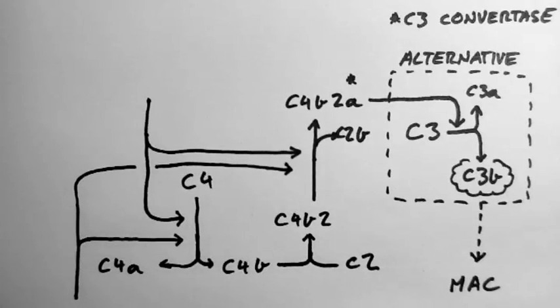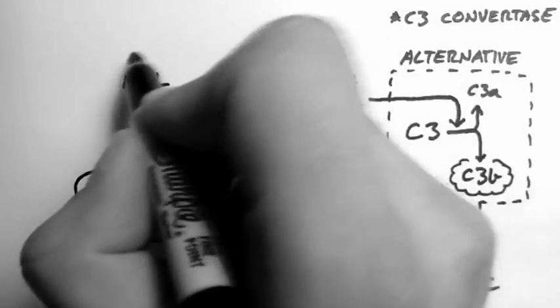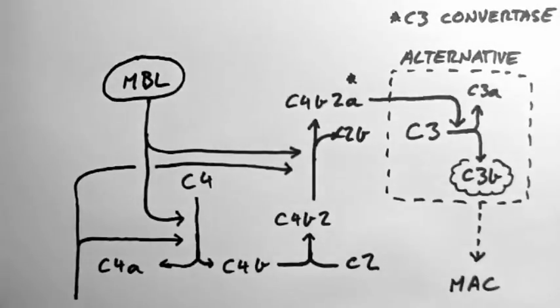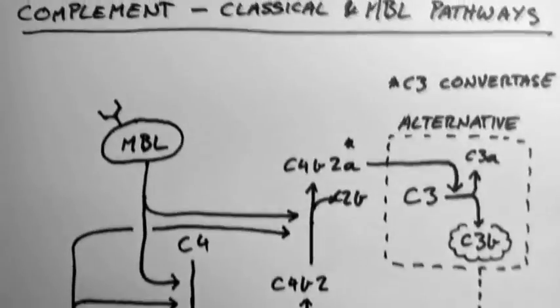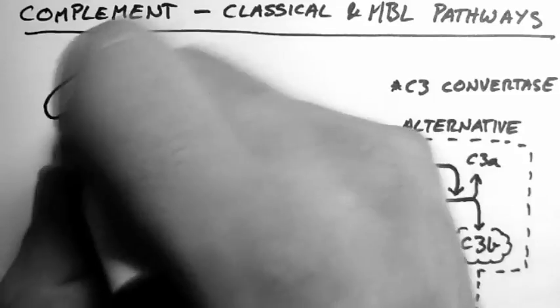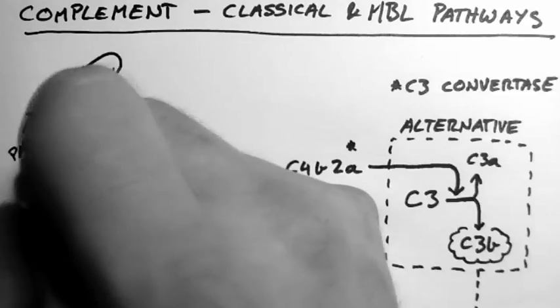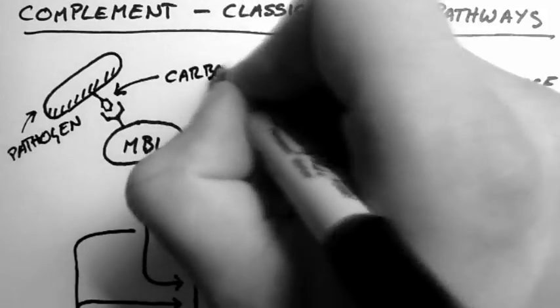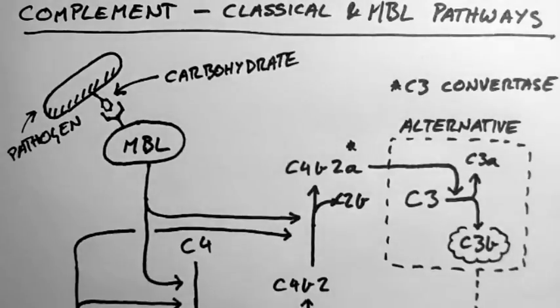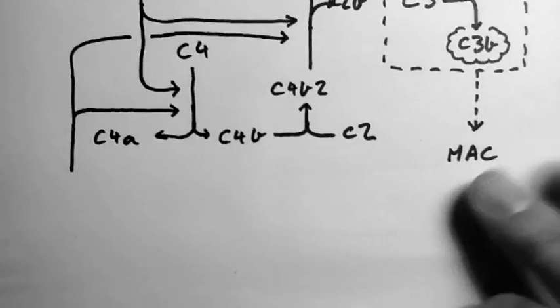So let's talk about the mannose binding lectin pathway. Mannose binding lectin is a protein which senses carbohydrates on the surface of pathogens. When it senses the carbohydrates on the pathogen, it activates this system. Now, these are only very specific carbohydrates, not all carbohydrates.